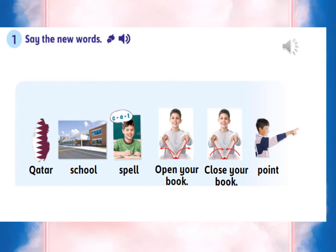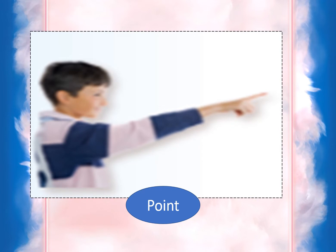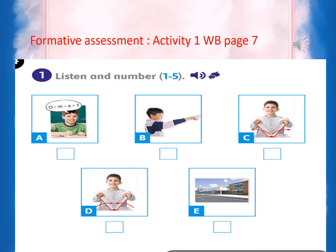Very good. After listening to the CD player, I'm going to follow the strategy of learning by photo. I mean, I'm going to display you a picture and you are required to try to identify it. School — really good. Open your book. Close your book. Point. Now we come to do affirmative assessment, activity number one, workbook page seven.